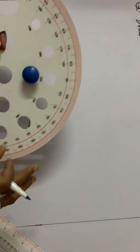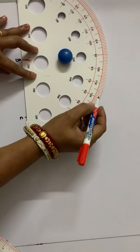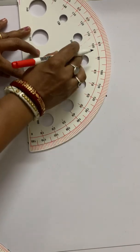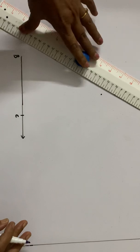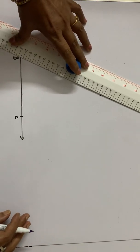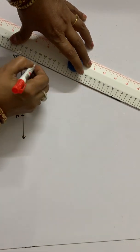Now keeping the protractor at the point B, we will take an angle of 65 degrees. Now, after drawing the angle ABC equal to 65 degrees...